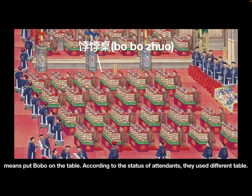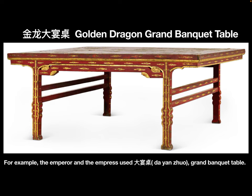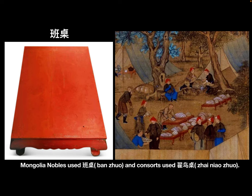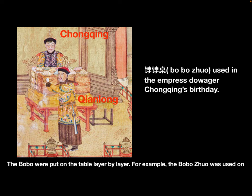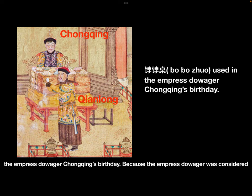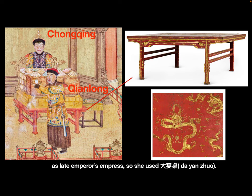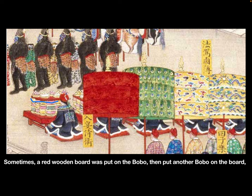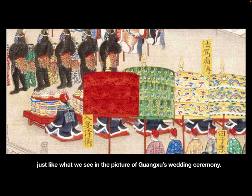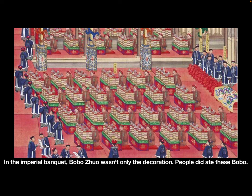According to the status of the attendants, they used different tables. For example, the emperor and empress used da yan zhuo, the ground banquet table. Mongolian nobles used ban zhuo, and consorts used zhai niao zhuo. The bebe were put on the table layer by layer. On the empress dowager Chongqing's birthday, since she was considered a late empress, she also used da yan zhuo. Sometimes a red wooden board was placed on the bebe, then another layer of bebe placed on top, just as we see in the picture of Guangxu's wedding ceremony.